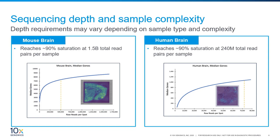Ultimately, our sequencing depth guidelines should just be used as a starting point. You will need to adjust based on your tissue type and quality, as well as what level of saturation you will need to answer the questions you are asking in your experiments.